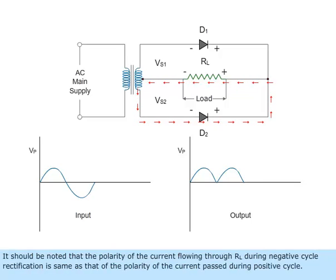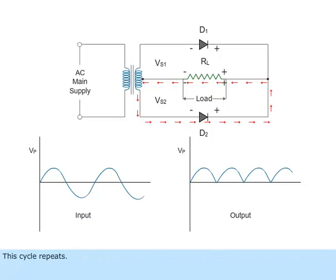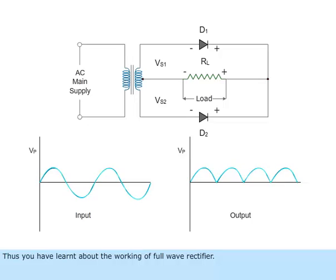It should be noted that the polarity of the current flowing through RL during negative cycle rectification is the same as that of the current during the positive cycle. This cycle repeats. Thus, you have learned about the working of a full wave rectifier.